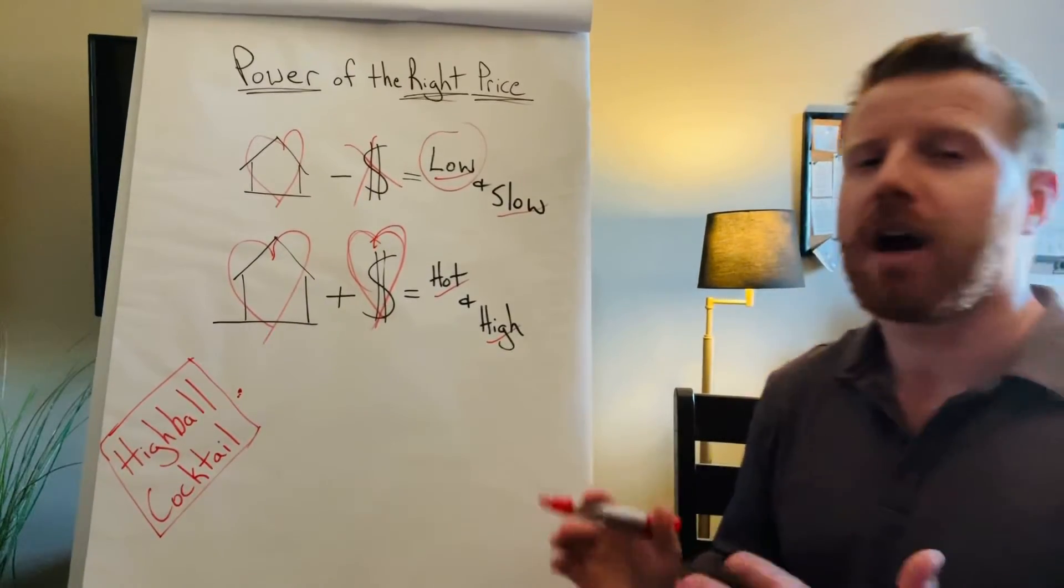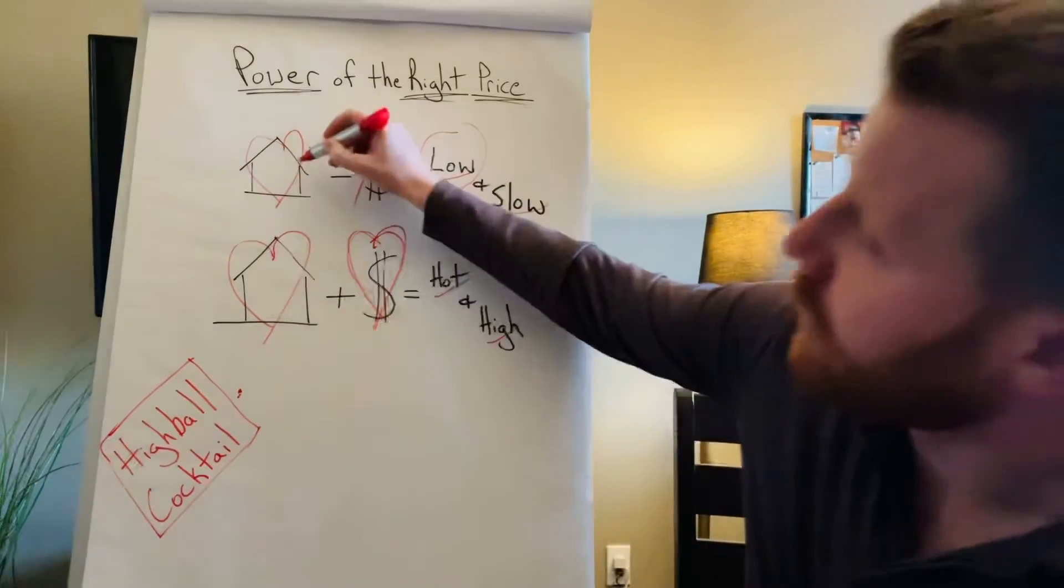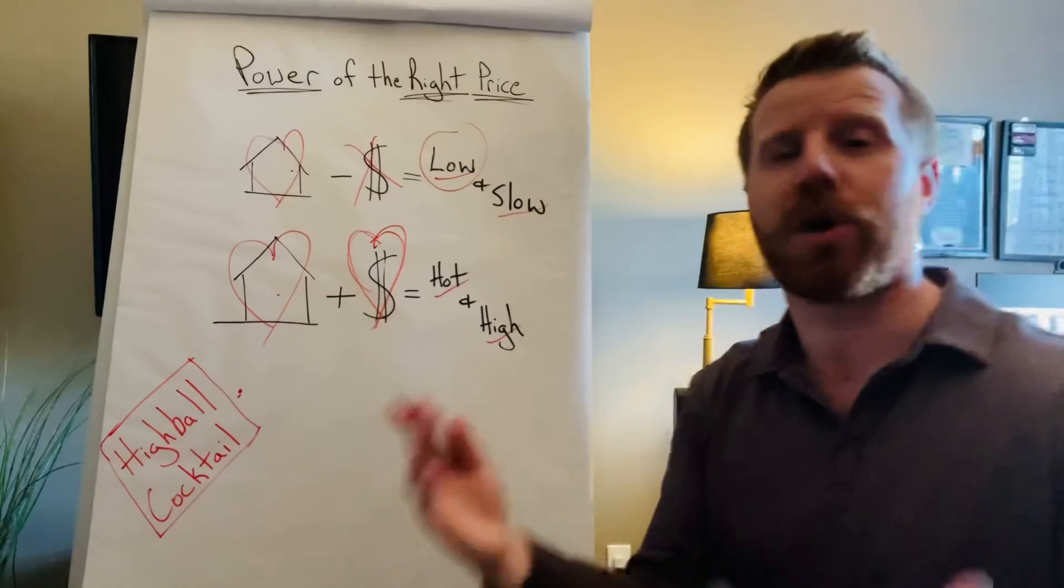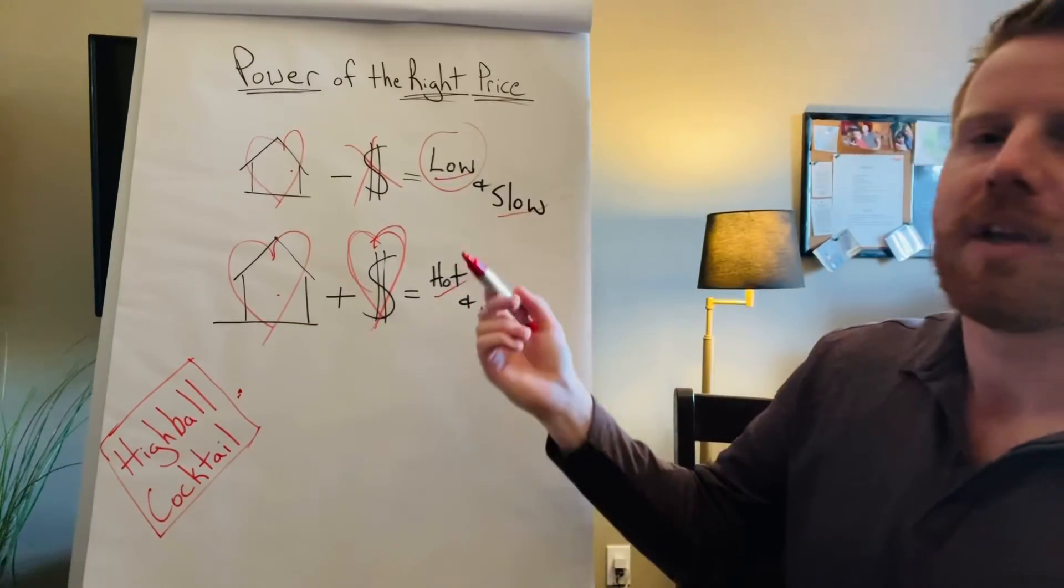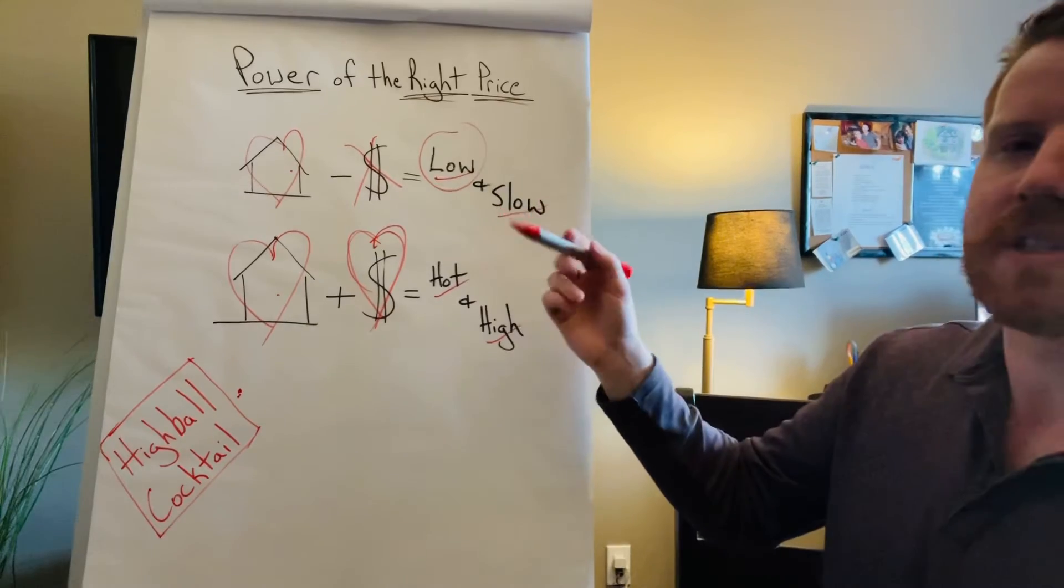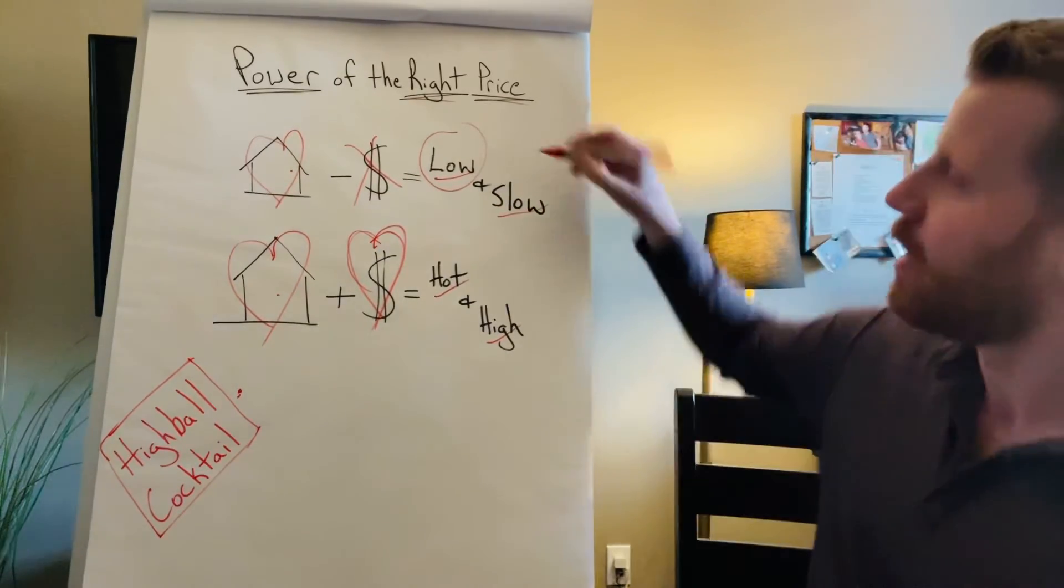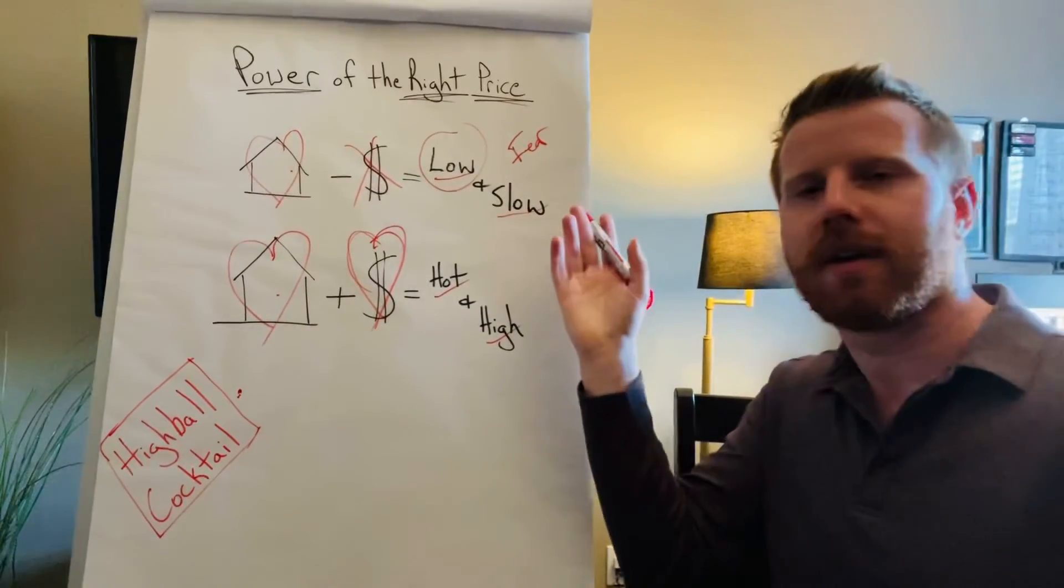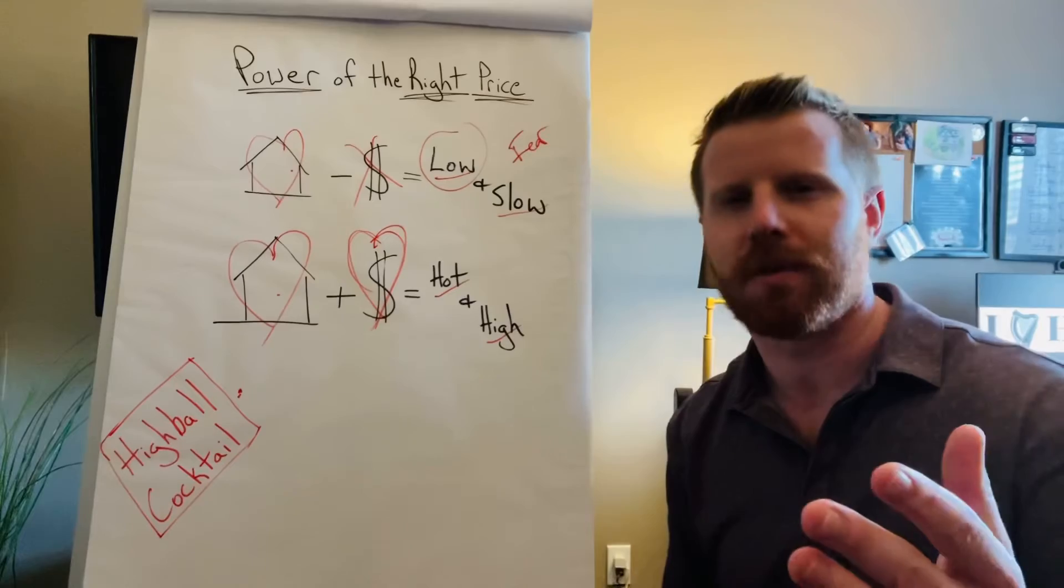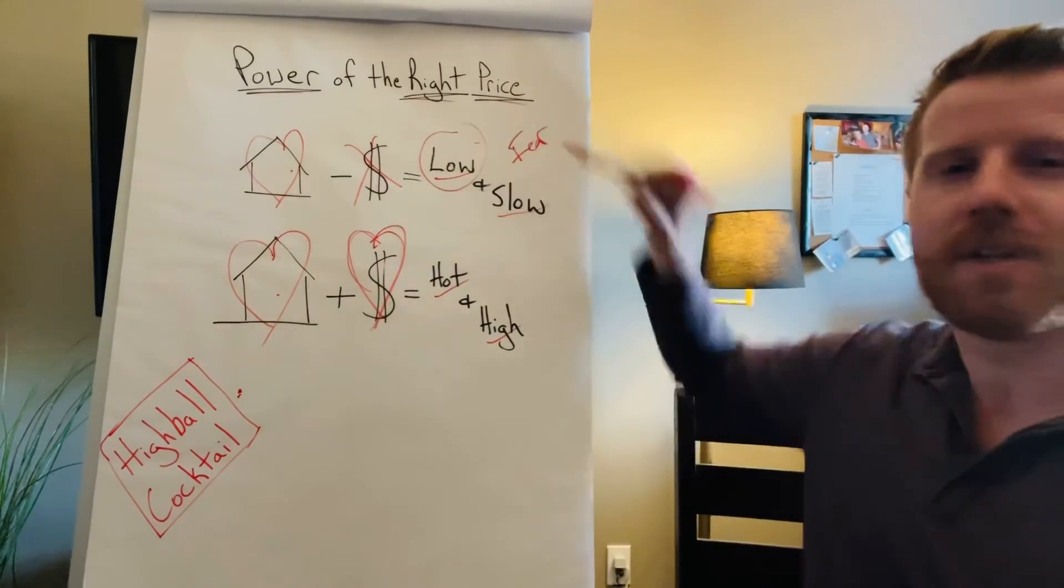There are very powerful emotions that are at work here. In both of these, you need desire. Desire for the product. In this case, the house. But with the lowball cocktail, what happens with this slow and low is that the other emotion in play here is fear. Fear of regret. You've heard of buyer's remorse, right? But this is why they come in low. Because people don't want to do something that they're going to regret.